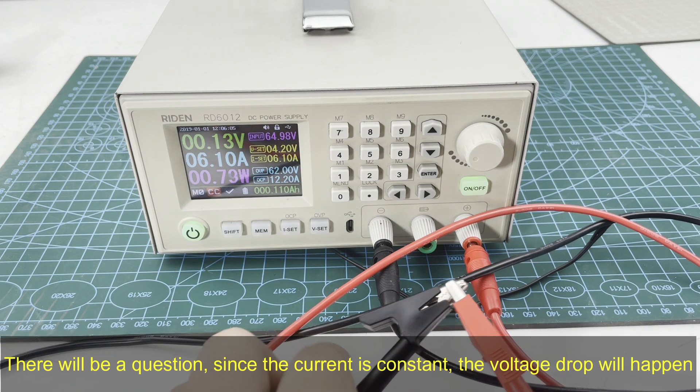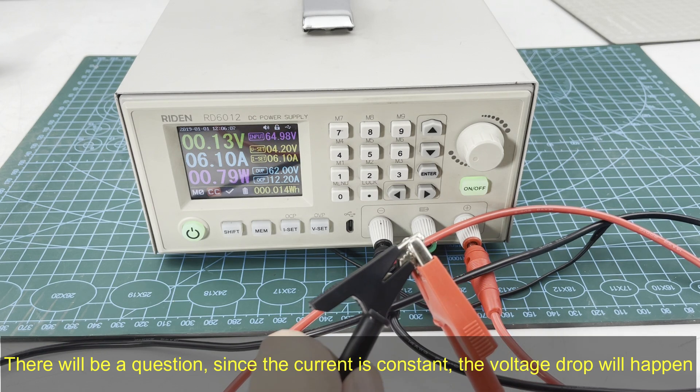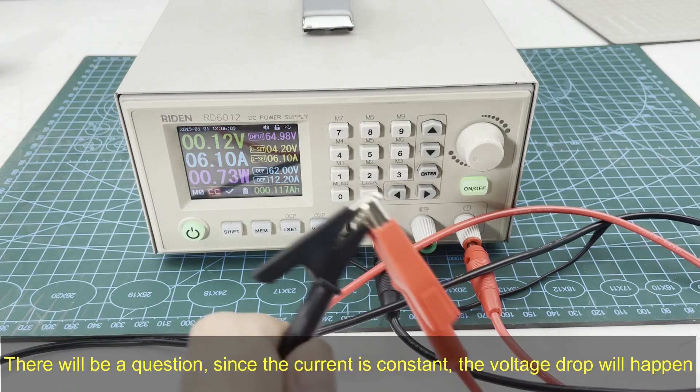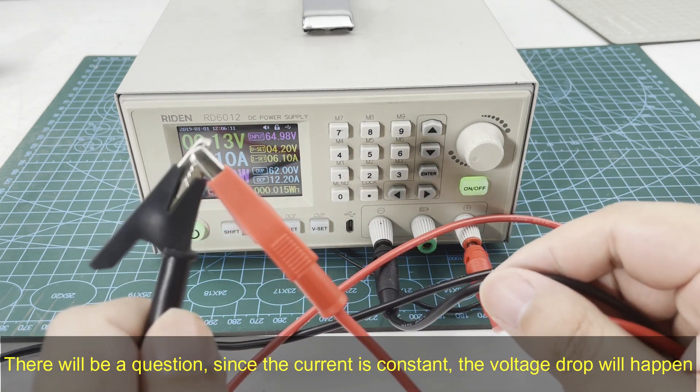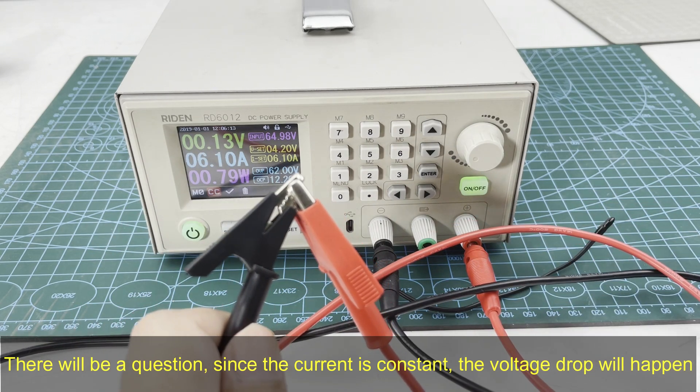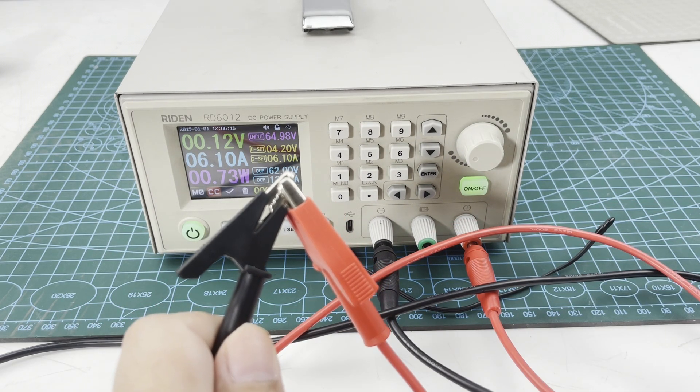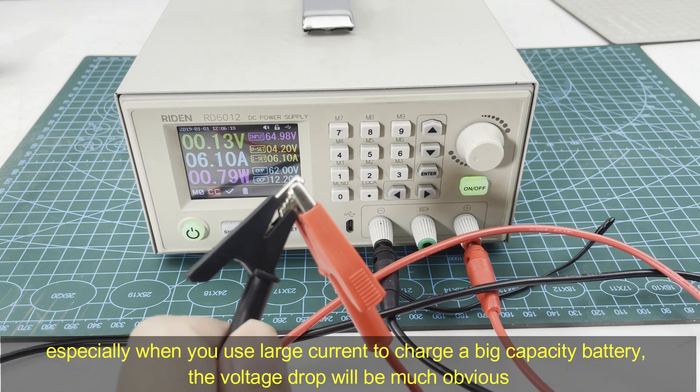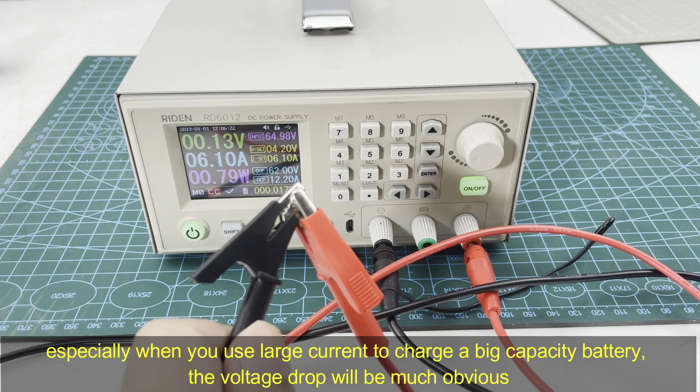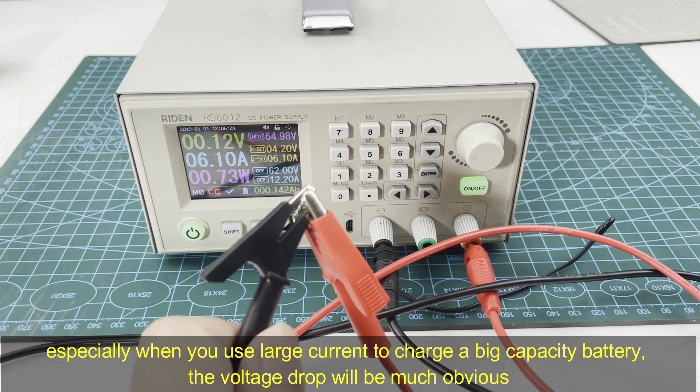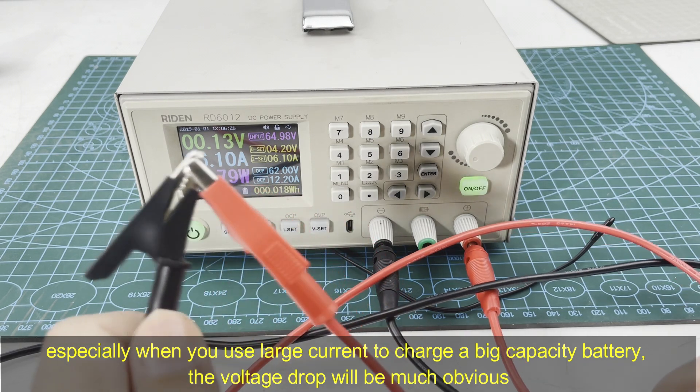There will be a question: since the current is constant, the voltage drop that happens on the cable is constant too, especially when you use a large current to charge a bigger capacity battery.